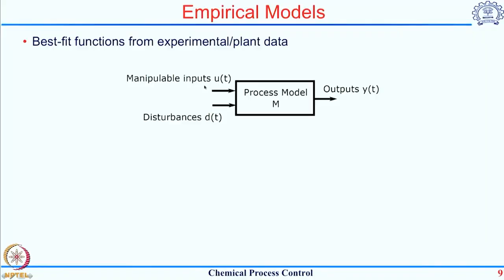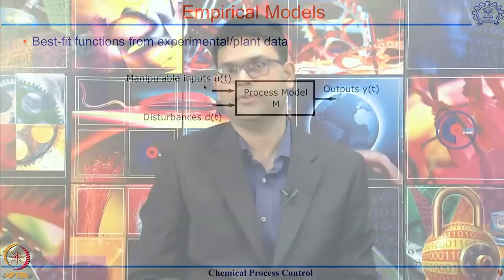Let us now see what are the other options available in case the first principle dynamic model has limitations for the process under consideration. In that case we go with what is known as an empirical model — a model which will be developed with the help of experiments.